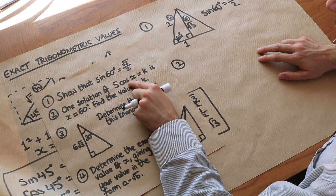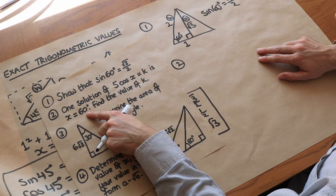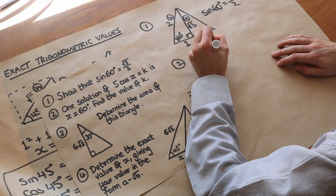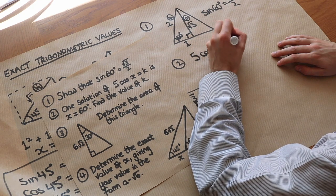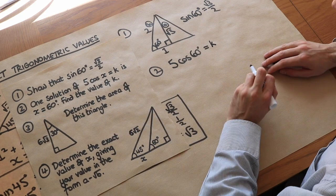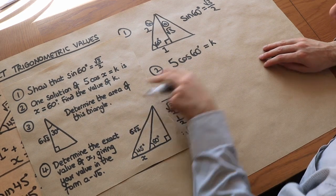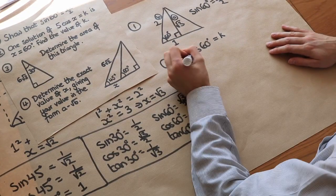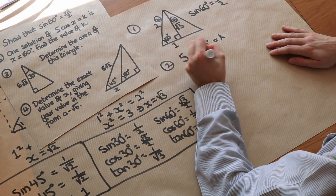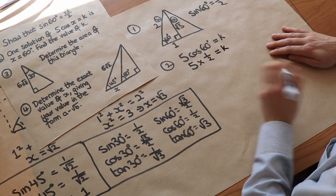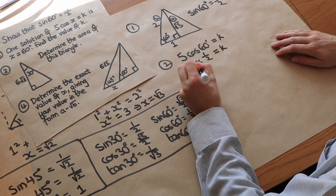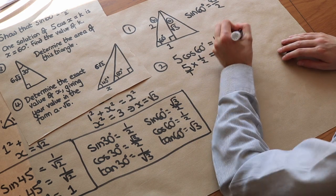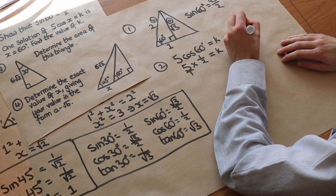Question 2: one solution of 5cos(x) = k is x = 60 degrees. Substituting in: 5 cos(60°) = k. We know cos of 60 = 1/2, so 5 × 1/2 = k. That gives k = 5/2.